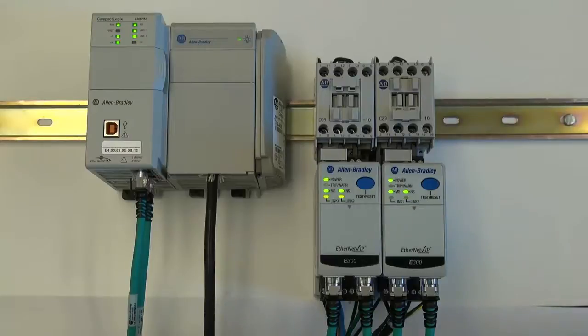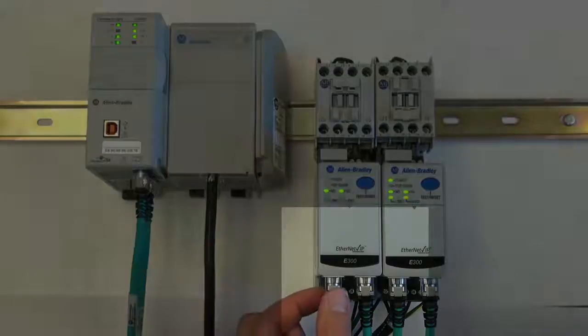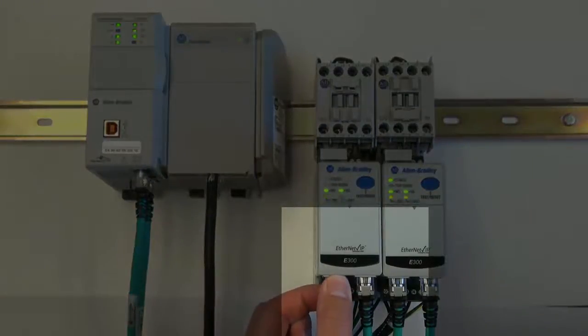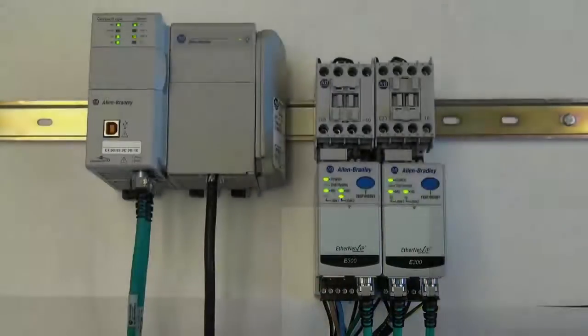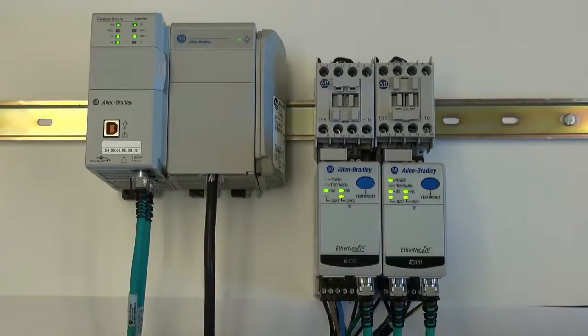If there is a communications disruption between the CompactLogix and the E300, the CompactLogix processor will automatically redirect Ethernet communications traffic down the other side of the ring.